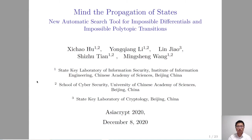Then, we refine those two distinguishers. Next, we study the relationship between our new defined distinguishers and traditional definitions. Furthermore, we present our automatic search tool for those two distinguishers, and we apply our tool to various block ciphers. Finally, I will make a conclusion.